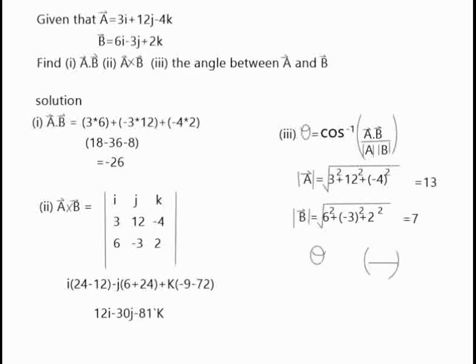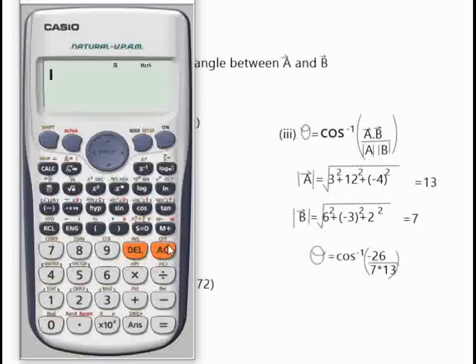Finally, you go back to your formula. Already, we know our dot product to be minus 26. Then the value of our A magnitude is 13 and B magnitude is 7. Let's go ahead to input this value into our calculator to find out what our final answer will look like.